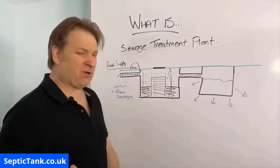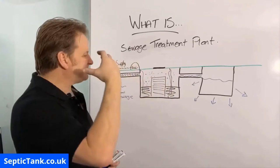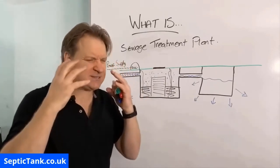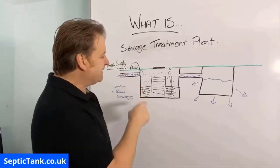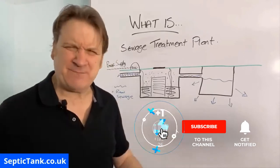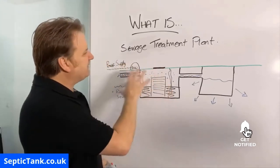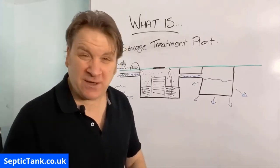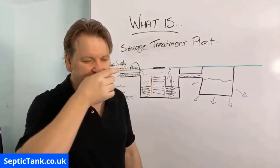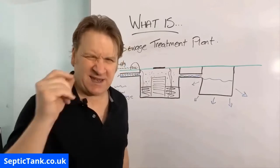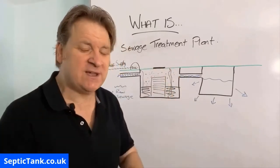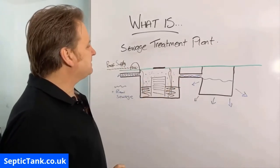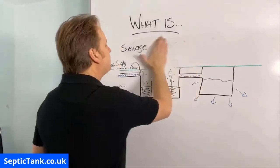With a sewage treatment plant there are a lot more moving parts — compressors, motors, cogs, bearings, pulleys, shafts — loads of things to go wrong. Electricity and water just don't mix. Typically a sewage treatment plant only comes with a 12-month warranty, and unless you get it serviced every year by an approved contractor, the warranty is null and void. But anyway, that's what a sewage treatment plant is.